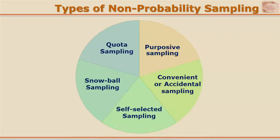We will understand these sampling methods in detail under non-probability sampling methods. They are: purposive sampling, convenient or accidental sampling, self-selected sampling, snowball sampling, and quota sampling. Each one of these sampling methods adopts a different base for selection of the sample — certainly not randomization — and the reason for selecting a particular person as part of the sample changes for each method.